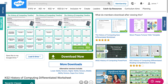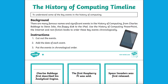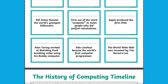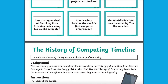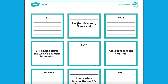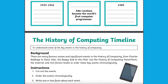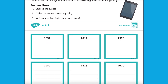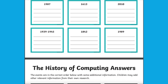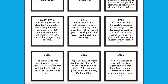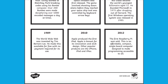Computers have come a long way in the past 70 years. Use this Key Stage 2 History of Computing Differentiated Worksheet to help children understand some of the key events over the past 70 years, which has advanced technology to what we know today. This worksheet allows children to use their research skills to find out about how computers have changed.